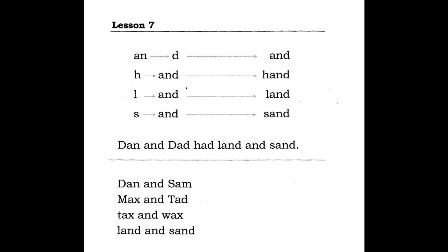In lesson 7, we add the letter D to the word an, and we get a new word. The word is and.